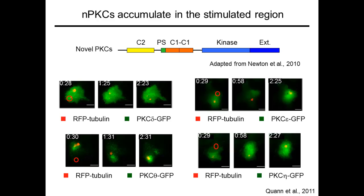We subsequently found that this DAG gradient functions at least in part by recruiting three distinct members of the novel PKC subfamily: PKC epsilon, PKC eta, and PKC theta.